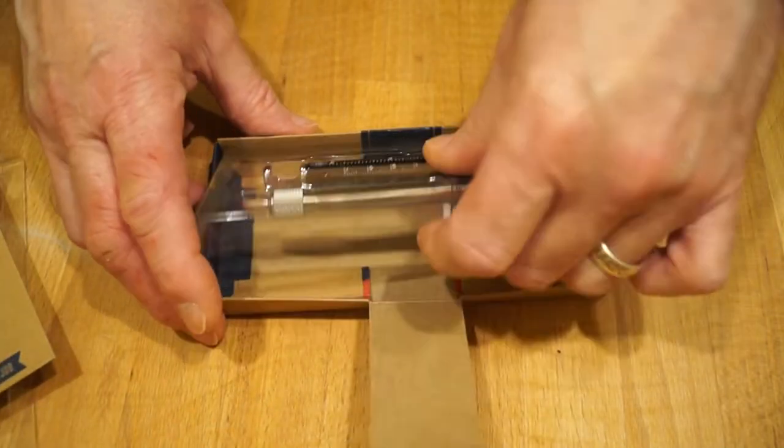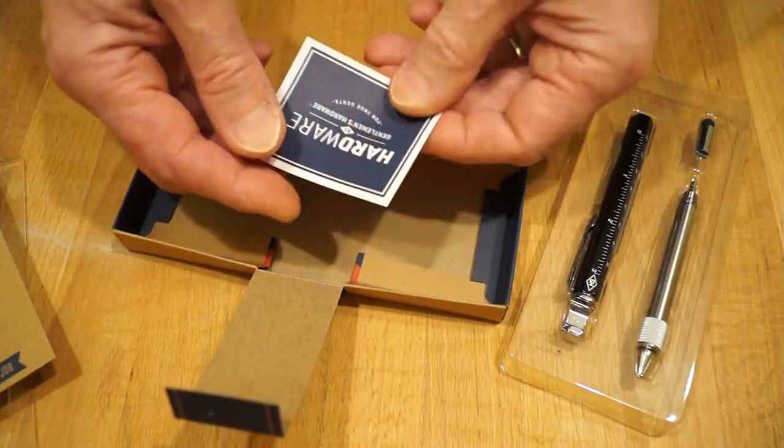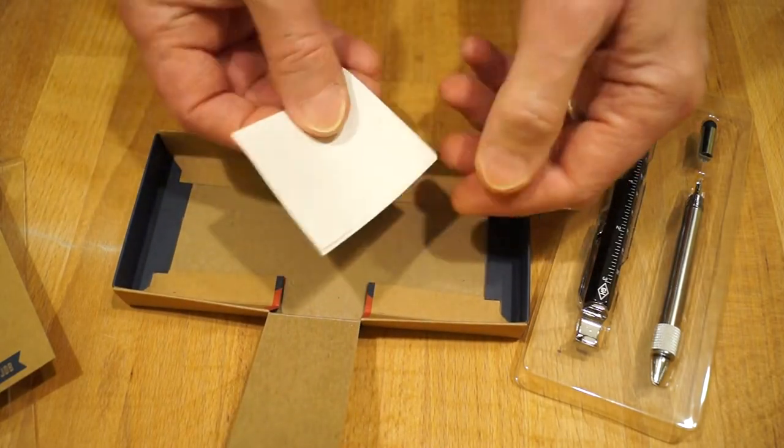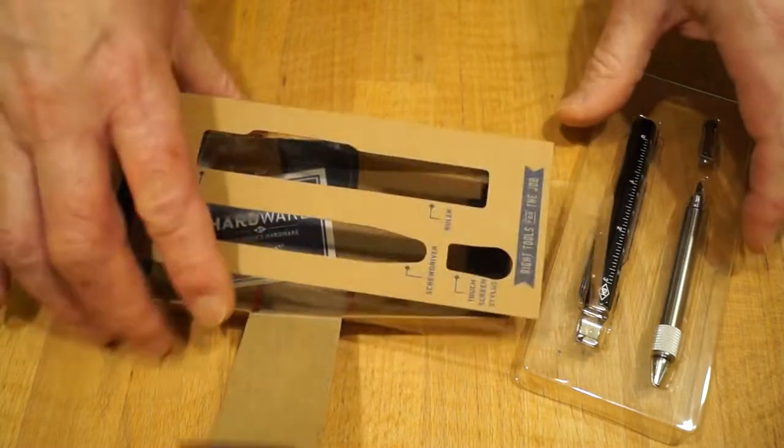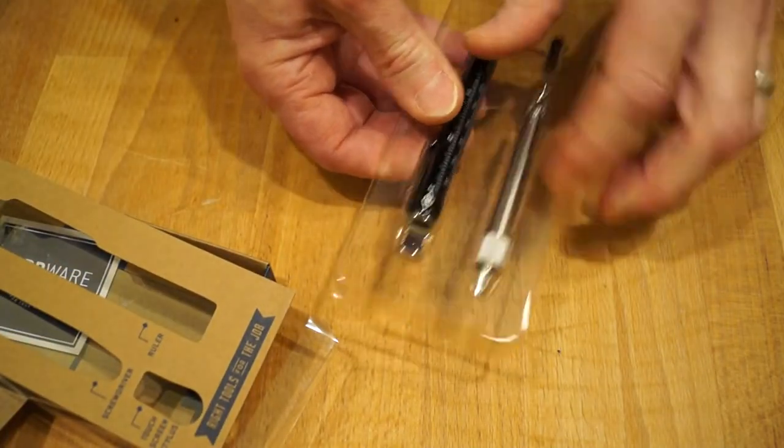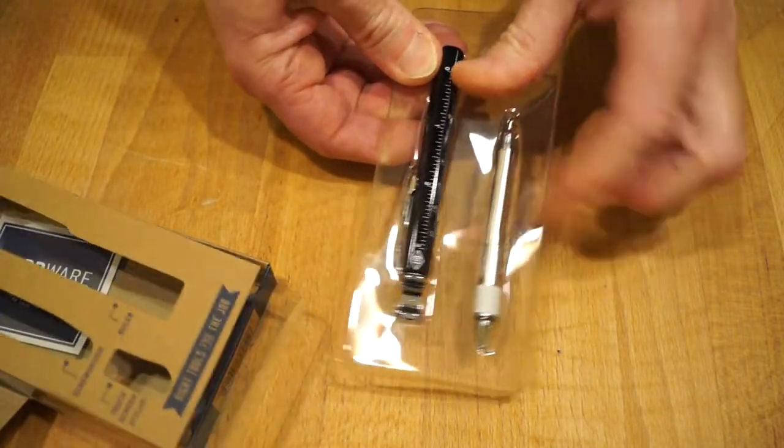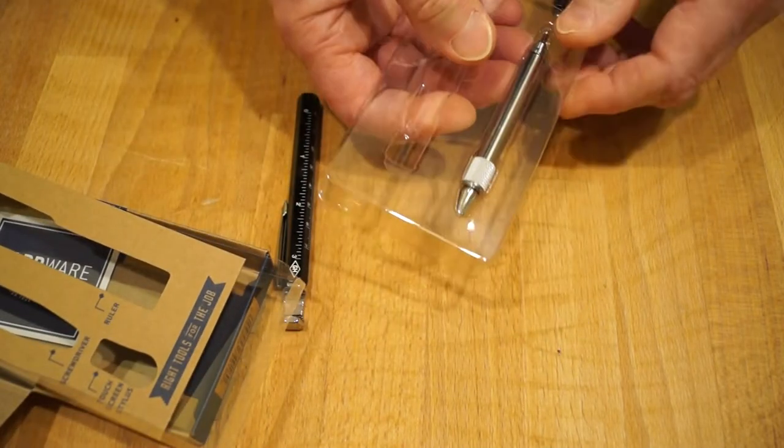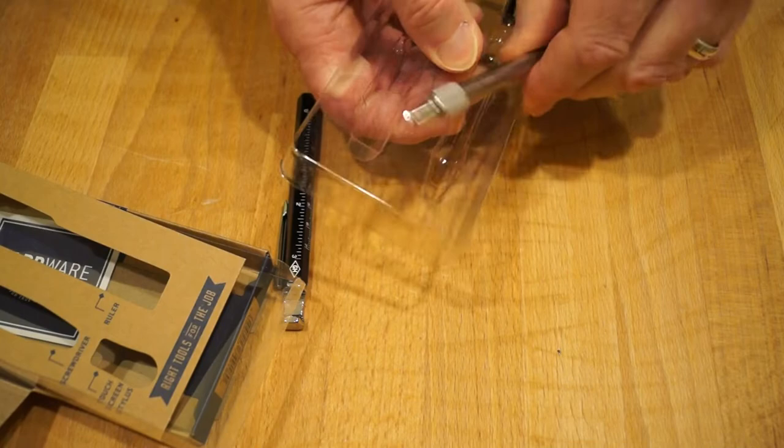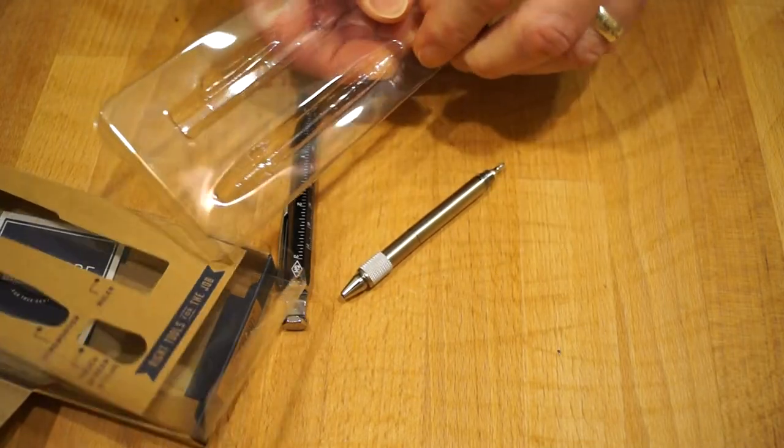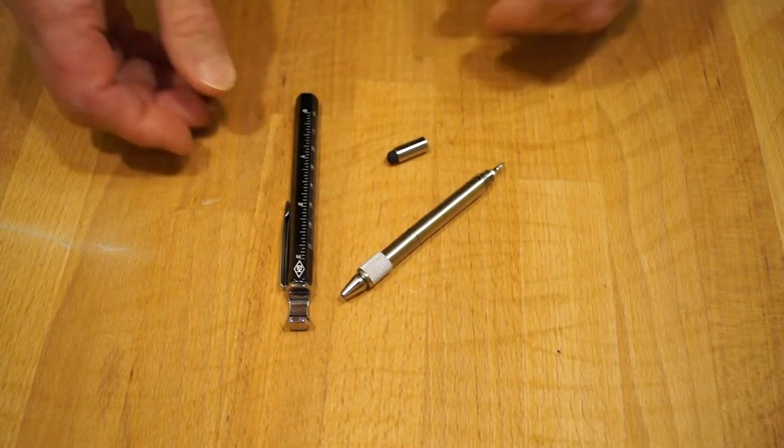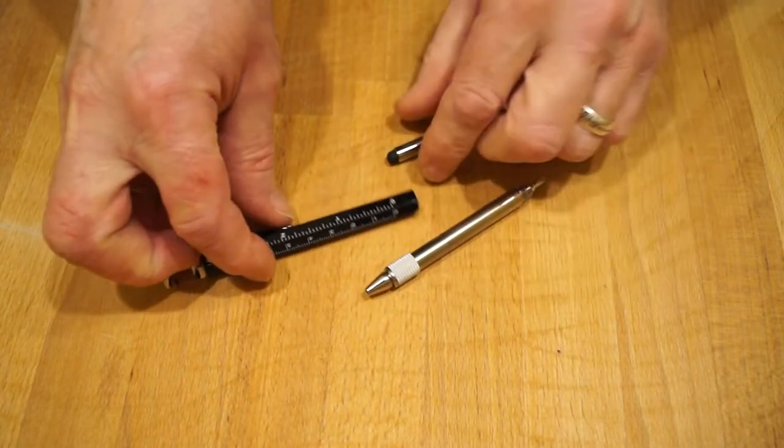What have we got here then? Gentlemen's hardware it says here. Cool, fine. Let's get the bits out. There's the pen and here's the stylus. Right, let's get rid of the cardboard over there as per usual and let's take a look at the components.